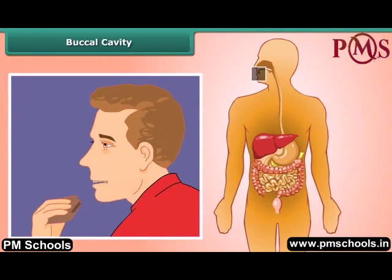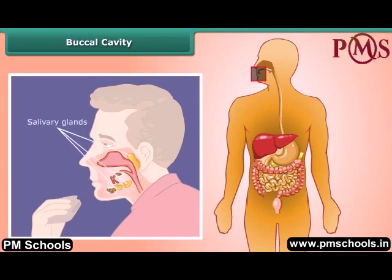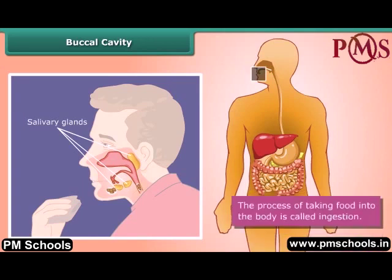Mechanical digestion breaks food into smaller pieces, and saliva in our mouth — produced by salivary glands — causes the breakdown of starches into sugars. This process of taking food into the body is called ingestion.